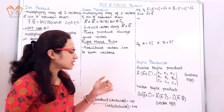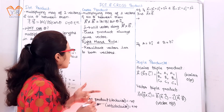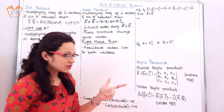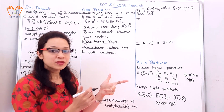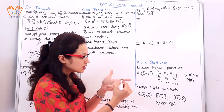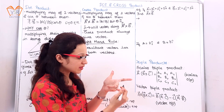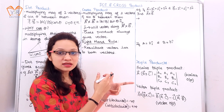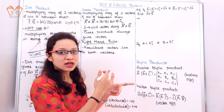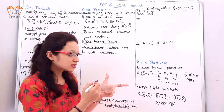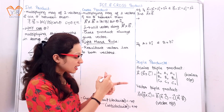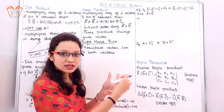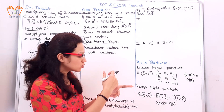Right hand rule: consider your fingers in this way — if this is vector a and this is vector b, then this is the resultant output. The right hand rule tells us that the angle between the resultant vector and vector a is 90°.